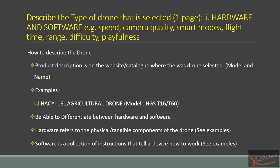So here's the question. It states that we need to describe the type of drone that is selected — one page. We need to talk about the hardware and software. Some of the examples given include the speed, camera quality, smart modes, flight time, range, difficulty, and playfulness.